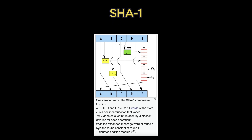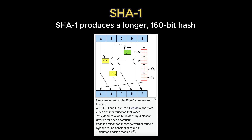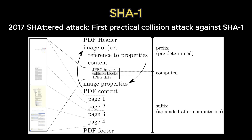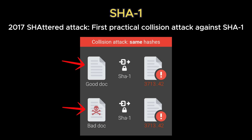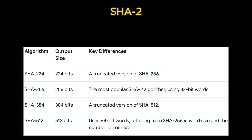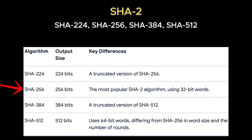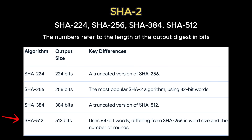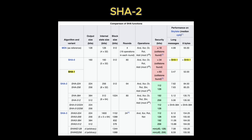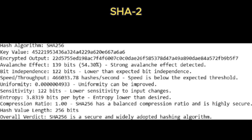SHA-1, designed as MD5's successor, provided stronger resistance for a time but has also been deprecated after large-scale collision demonstrations — for example, the 2017 SHAttered attack by Google researchers, which specifically created two PDF files that were different but had the same SHA-1 hash. SHA-2, which includes variants like SHA-224, SHA-256, SHA-384, and SHA-512, remains the workhorse of modern cryptography today, securing web traffic through TLS/SSL, underpinning digital signatures, and even powering consensus mechanisms in cryptocurrencies like Bitcoin, where SHA-256 is used for mining.